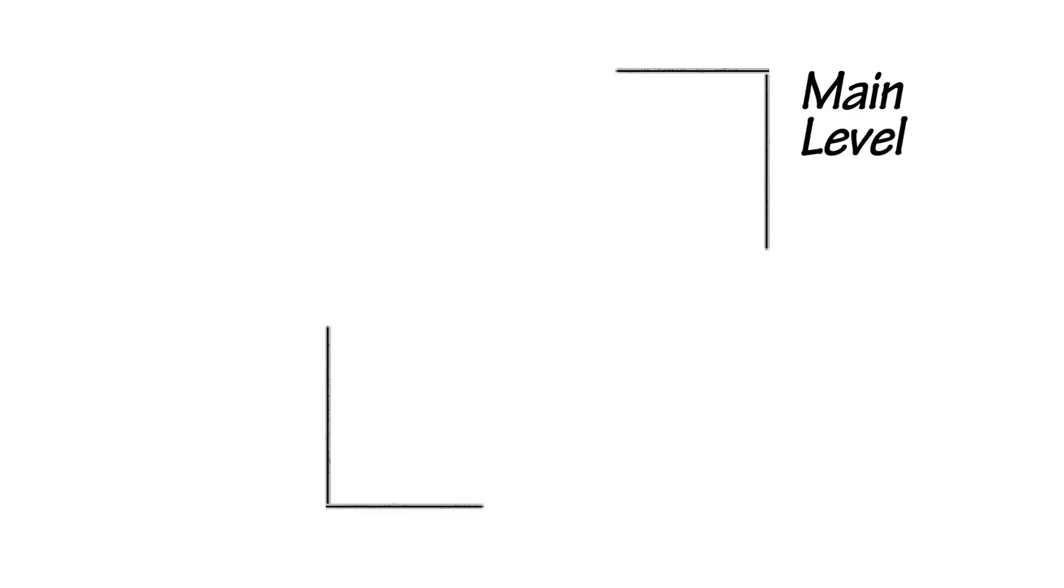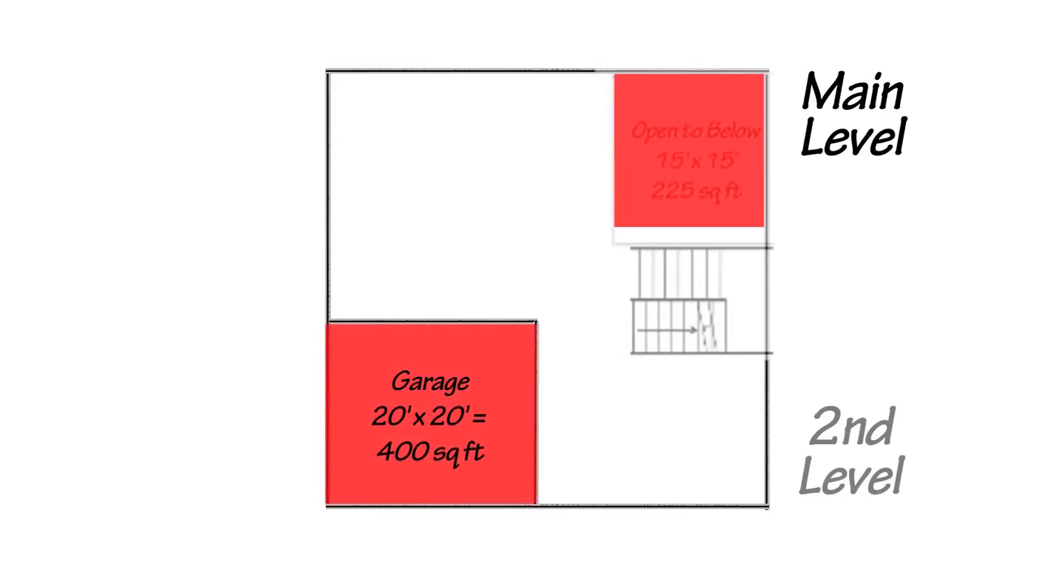The cheapest way per square foot to build a home is to have a box on a box. As soon as you start spreading out on that first floor level, you've got more concrete and more roofing, and that drives your cost per square foot higher.